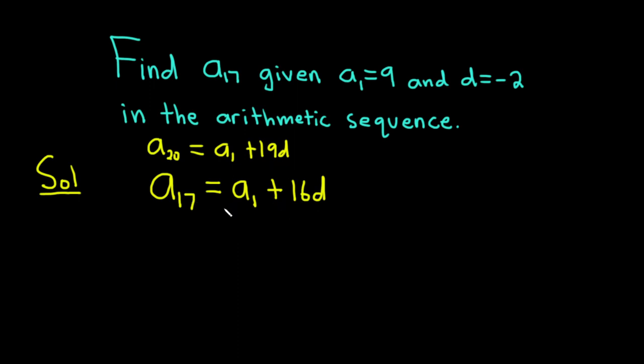This always works. So again, to get to the 17th term from the first term, how many d's do you have to add? You just subtract: 17 minus 1 is 16.